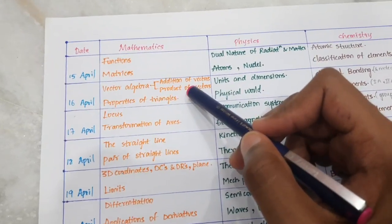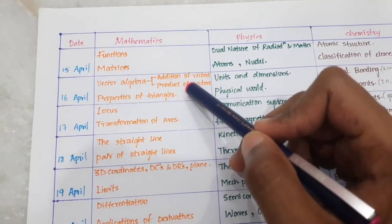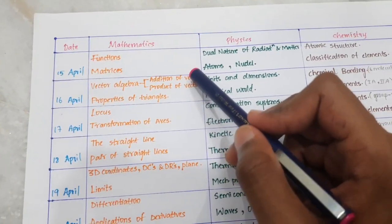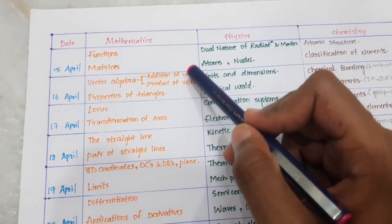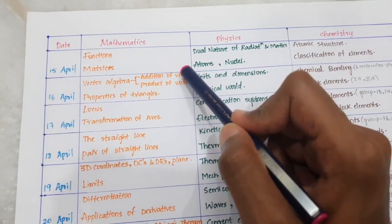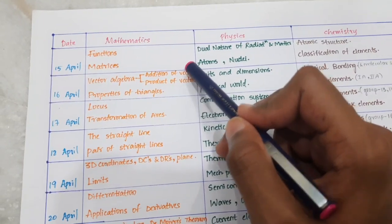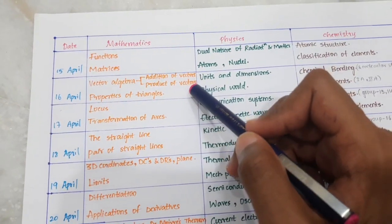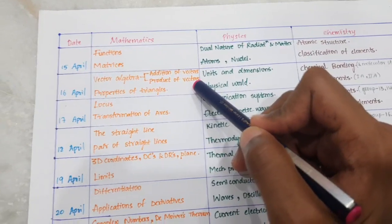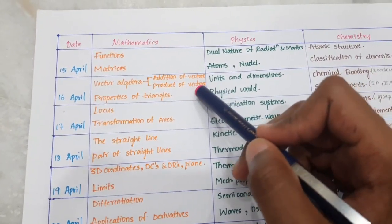For matrices: transpose, adjoint, inverse, simultaneous linear equations, Cramer's rule, and matrix inversion method. Day 2, April 16th: Vector Algebra — two types: addition of vectors and product of vectors. For addition of vectors: classification of vectors, scalar multiplication, angle between two vectors, linear combination, and vector equation of line and plane. For product of vectors: dot product, angle between two vectors, vector equation of plane in normal form, and scalar triple product.